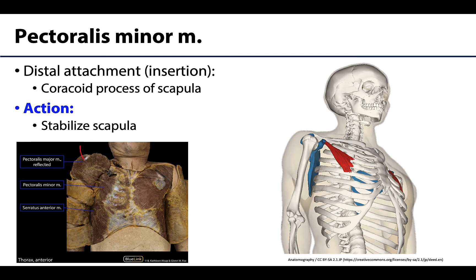Deep to pectoralis major, once pec major is reflected, you will find pectoralis minor — smaller, as its name suggests. It has a distal attachment on the coracoid process of the scapula, meaning it does not cross the shoulder joint and will only affect scapular actions. The main role of pectoralis minor is to stabilize the scapula, keeping it in place to allow the shoulder joint to perform more purposeful movements.